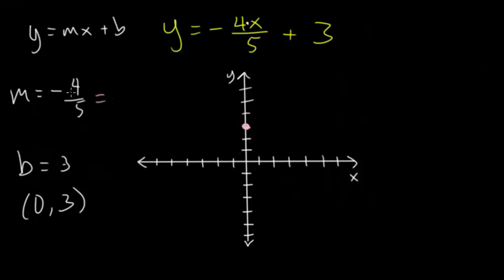And then our slope is minus four fifths. So our rise is going to be down because our slope is negative. So we're going to go down four. And then our run, we're going to go five to the right. So let's count down four. So one, two, three, four, and then five to the right, one, two, three, four, five, right about there.